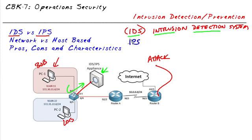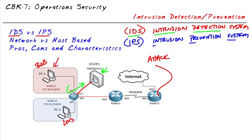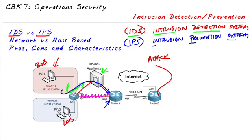Now let's compare that with IPS, which stands for intrusion prevention system. It works a lot like an IDS, except we're going to put it inline with the traffic. The current path between PC1 and PC2, because they're in different VLANs, goes through their default gateways via a trunked connection between the switch and the router. If we replace that connection by inserting the appliance between the switch and the router, then traffic from VLAN 11 goes up through the IPS — now inline — to the default gateway.